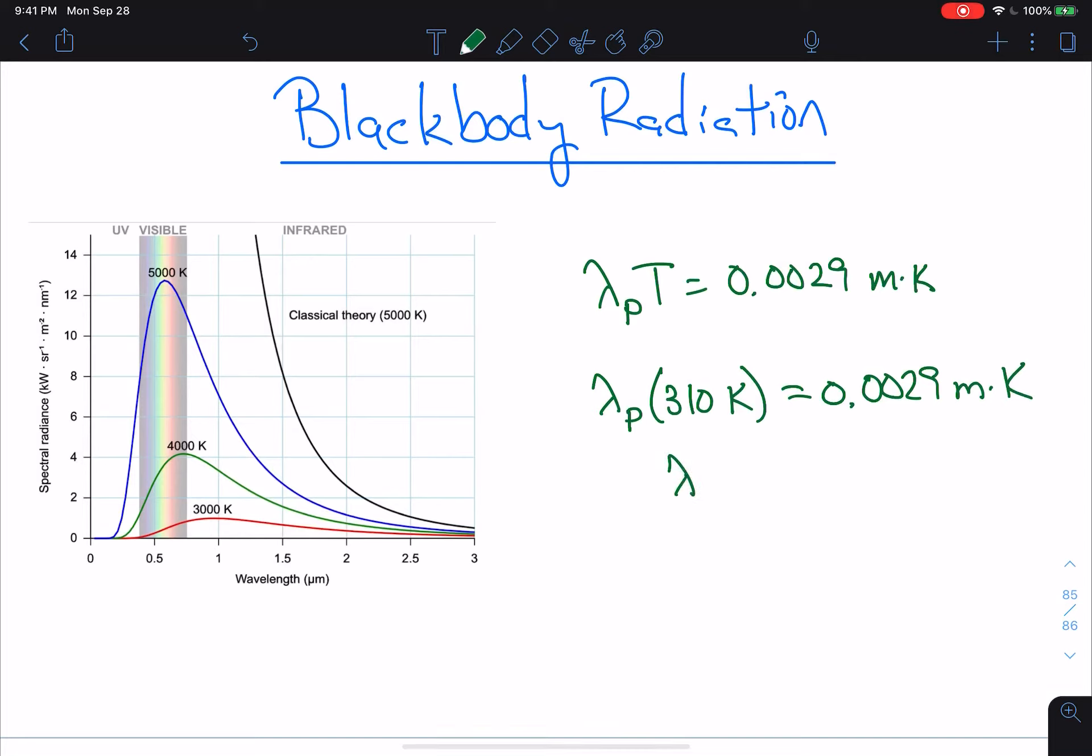And if you solve for the wavelength, this works out to be about 9,355 nanometers. Now, this graph over here is in micrometers. So, if I convert that to micrometers, that's going to be about 9.355.